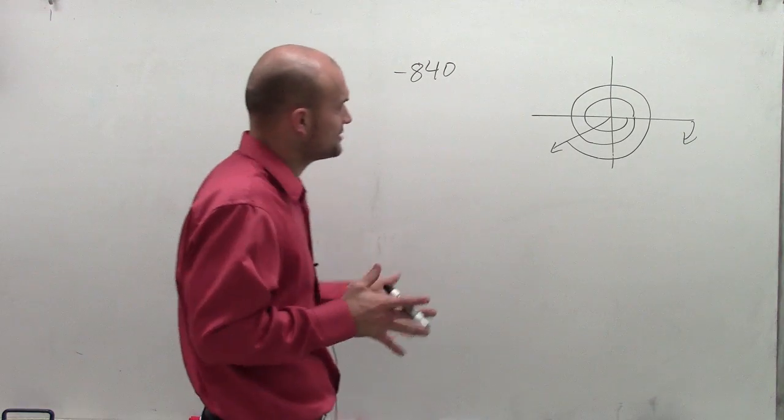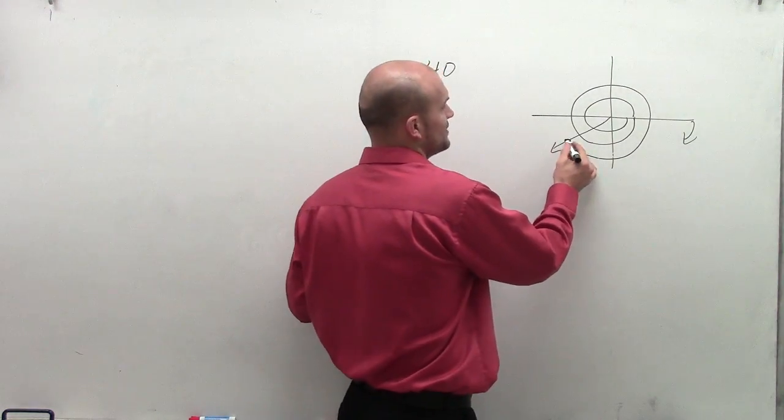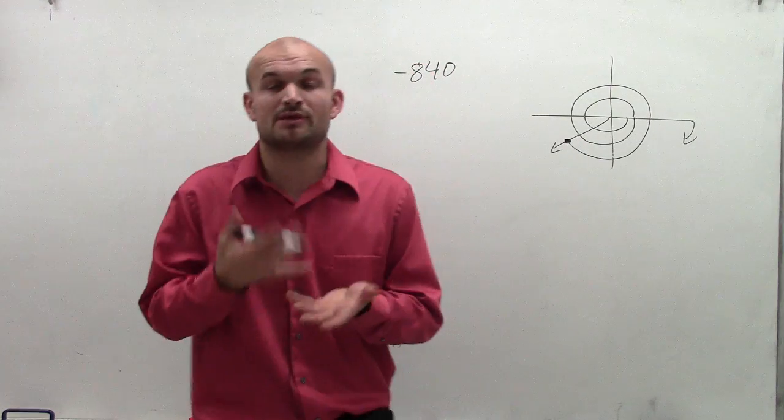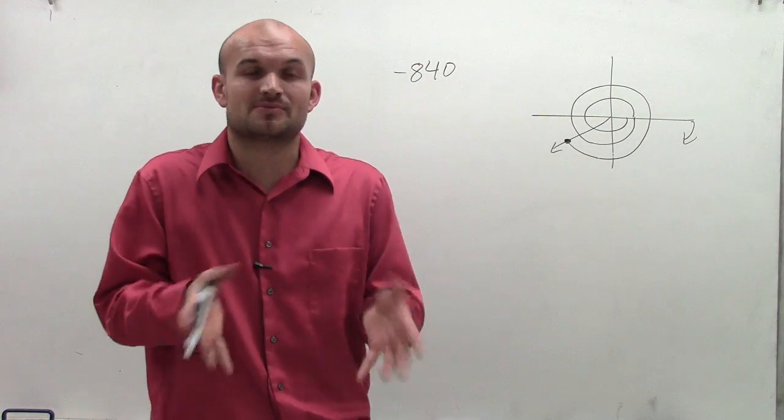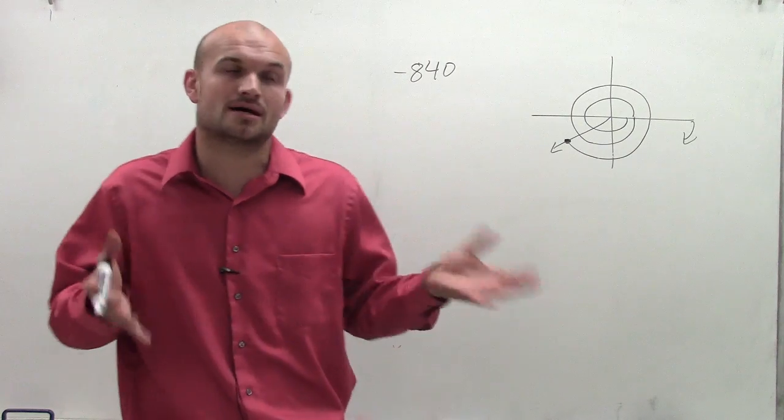Now what we want to do to evaluate this point, we need to find where is this point on the unit circle that we can evaluate for sine, cosine, and tangent, because we need to know the x and the y coordinates of that point.